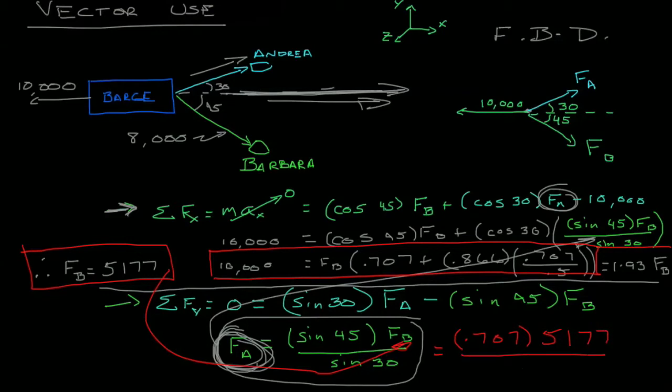And we're going to divide that by the sine of 30, which is simply 0.5. And I'm doing that on my calculator right now. That's 7,320. So that tells us that the tension in force A is 7,320, and the tension in force B is 5,177.